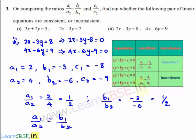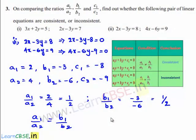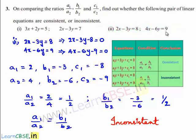By using the second condition, if a1 by a2 is equal to b1 by b2, we say that the given set of linear equations are inconsistent. Therefore, the given set of equations 2x minus 3y is equal to 8 and 4x minus 6y is equal to 9 are inconsistent.